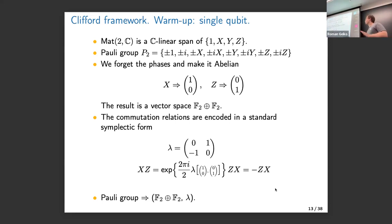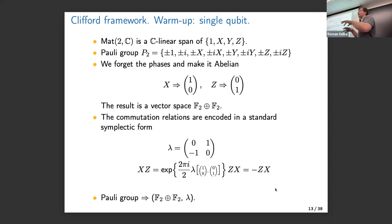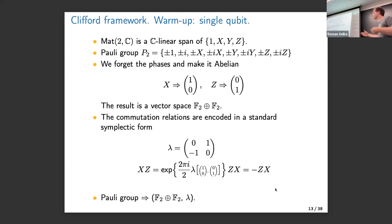We want to forget only the overall phase but recover the commutation relations. We do this by introducing a symplectic form: we think of X and Z as conjugate variables and their commutator is encoded by evaluating the symplectic form lambda on the corresponding vectors in our vector space. This gives us an element of F2 encoding commutation relations. So we trade the Pauli group for a two-dimensional F2 vector space equipped with a symplectic form.